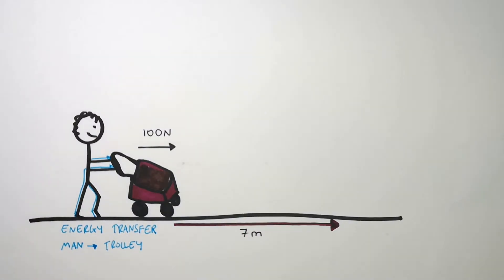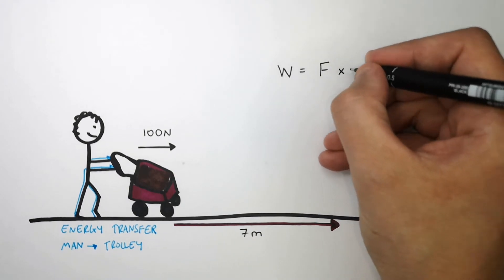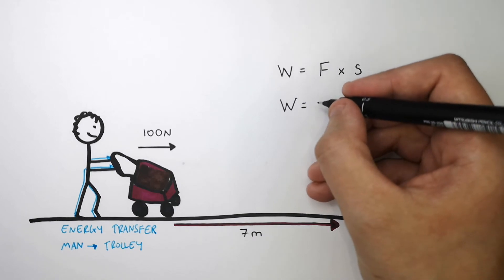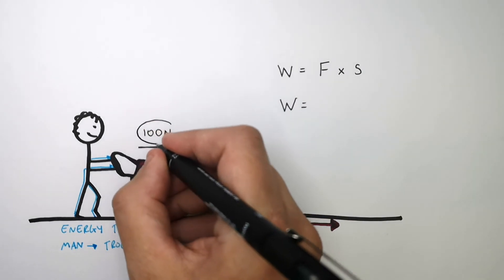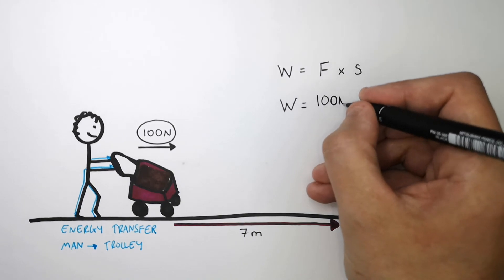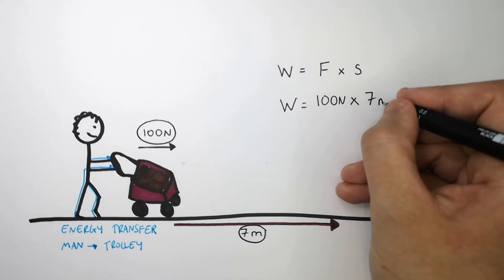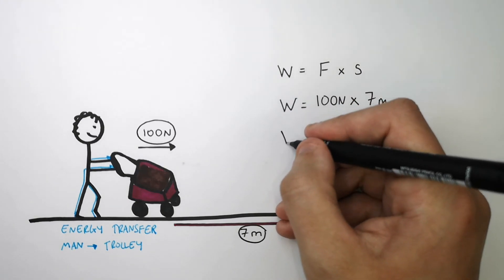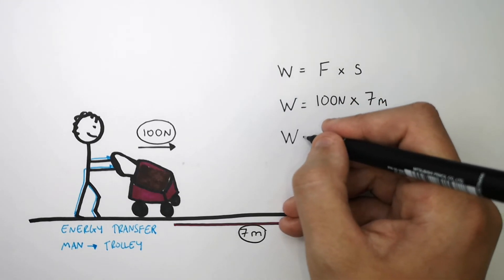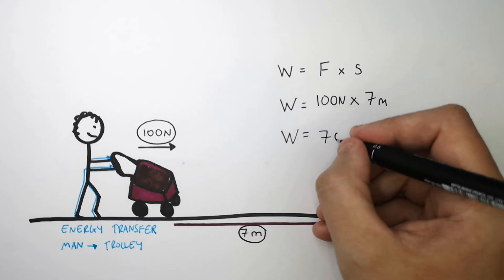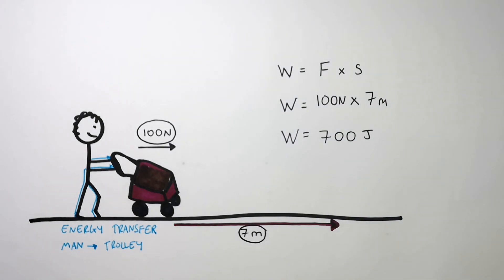To calculate work done, write the equation W equals F times s — work done equals force times distance. The force applied is 100 newtons, and that force was applied over 7 meters. So we do 100 newtons times 7 meters, which gives us the energy transferred — in other words, the work done to move it 7 meters — as 700 joules. So 700 joules of energy was transferred from the man's energy stores to the trolley's energy stores to move it.